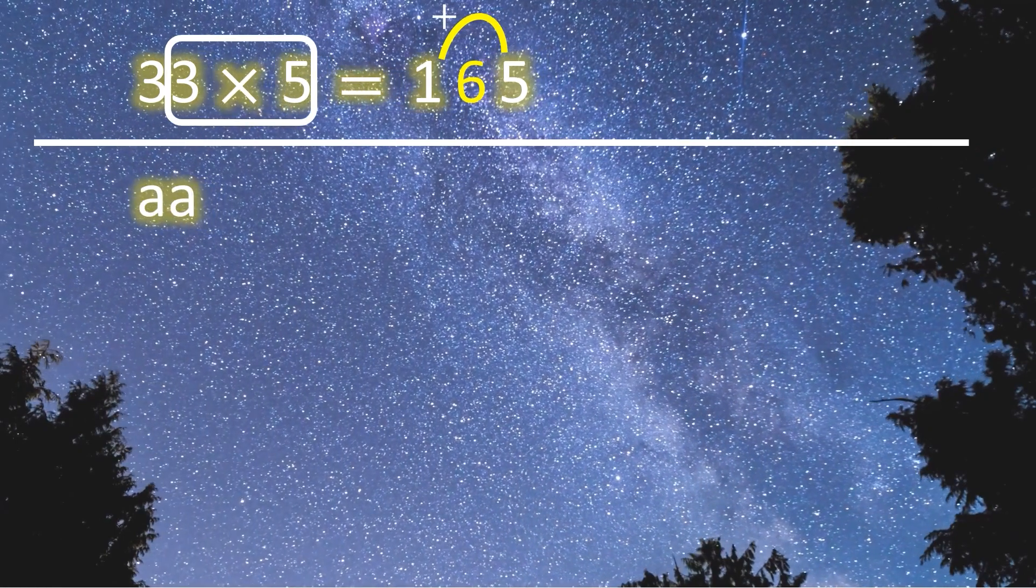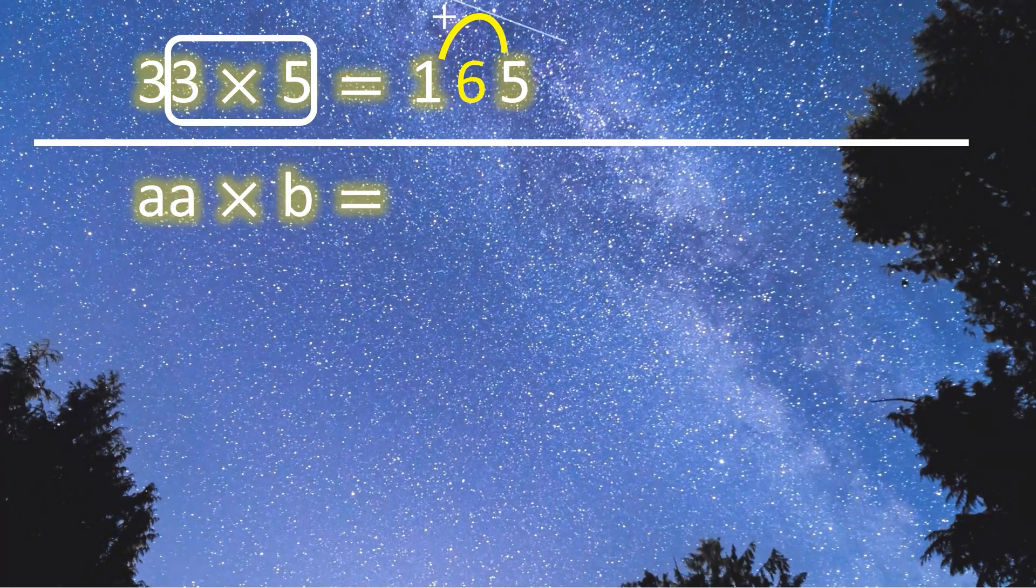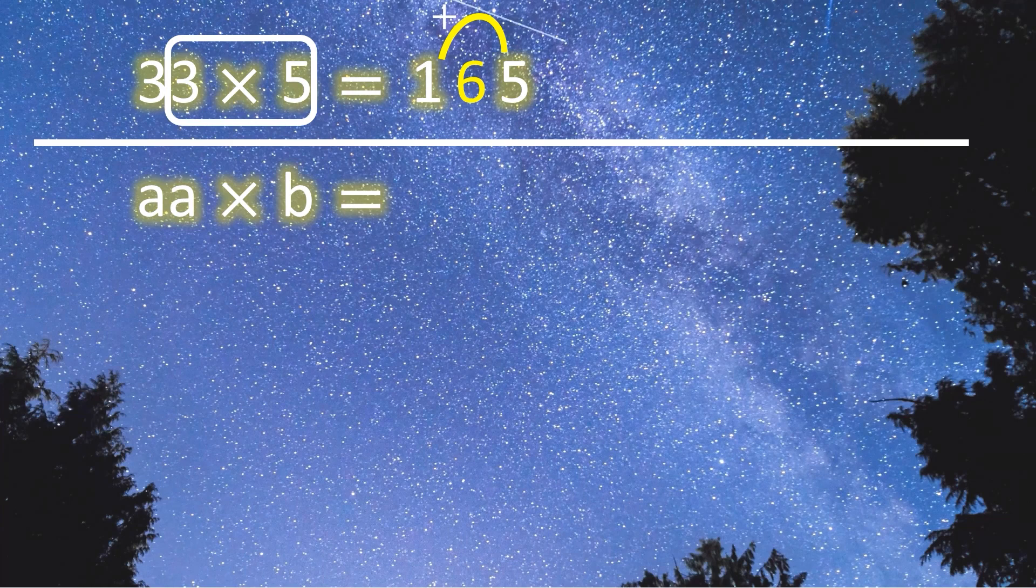Hello, my friends. Today, we're going to learn a trick for calculating the product of a two-digit number and a one-digit number faster than a calculator. Please note that the two digits of the number should have the same value.